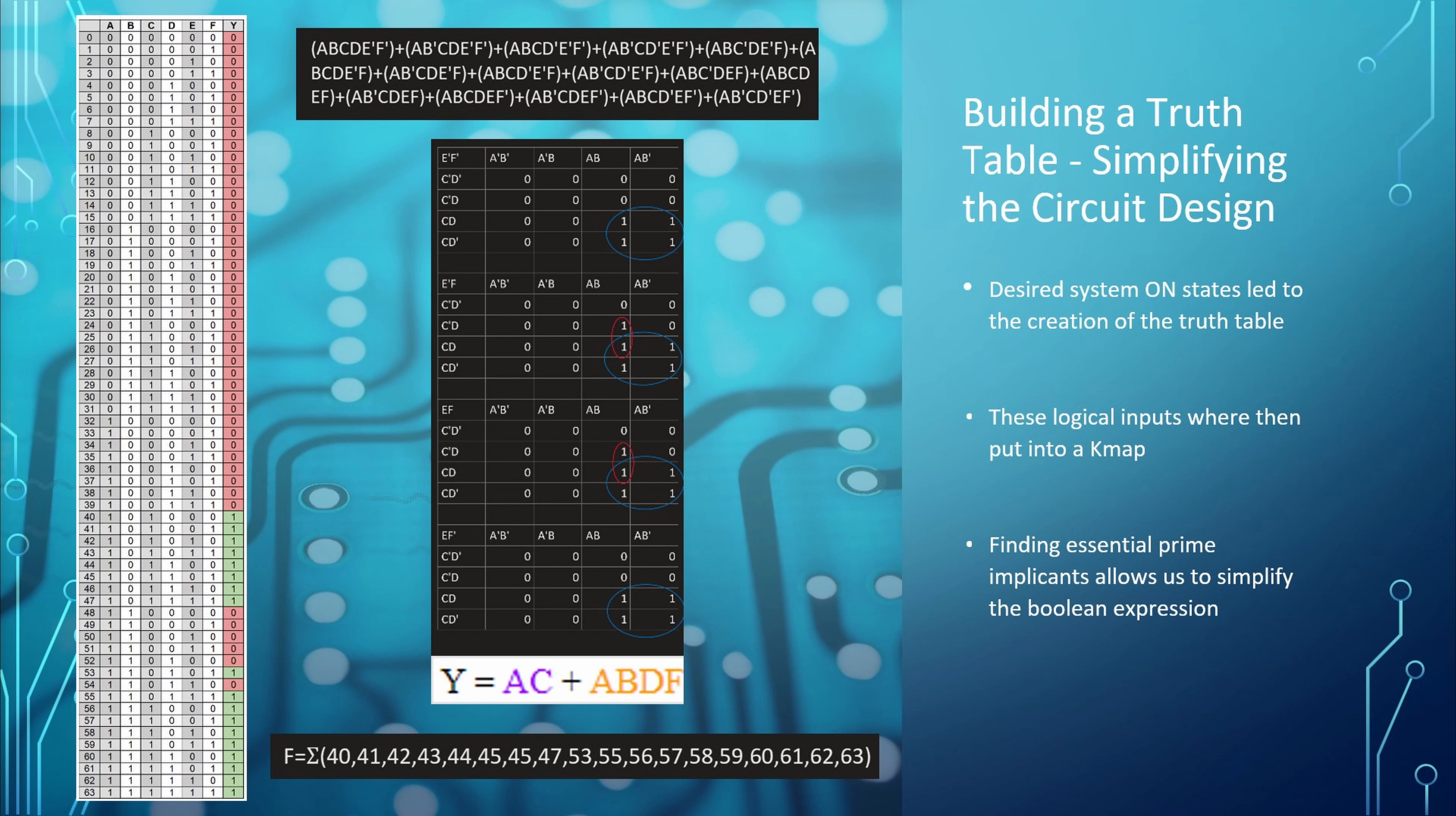As you can see, with this many terms, this equation is a bit complex to start building circuitry. To help simplify the design of the circuit, we utilize the K-map. Each minterm was mapped out according to its system state, using a 1 or 0. We were then able to keep the essential prime implicants, resulting in a much simpler algebraic expression, which is Y equals AC plus ABDF.